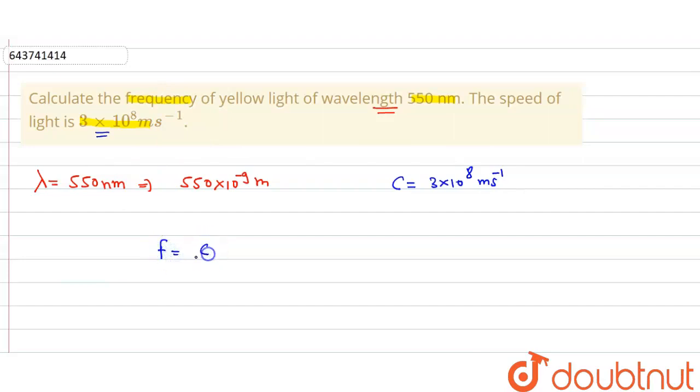is equal to c by lambda, where c is speed of light and lambda is wavelength. Here we have given the speed of light is 3×10^8 and the lambda is 550×10^-9 meter, so now we will put all this value in our given equation.